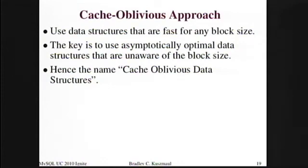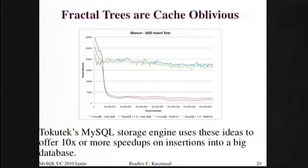One approach we use at Toku Tech is to avoid this whole thing by having data structures that don't depend on what the actual block size is. There are data structures that turn out to be asymptotically optimal without knowing the block size — those are called cache-oblivious data structures, because they're oblivious to the cache parameters like the block size of your system. We put that stuff into a storage engine, and it gives such good performance that we're actually faster on rotating disk than InnoDB is on SSD. And that's what we're selling. Thank you.